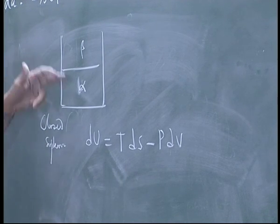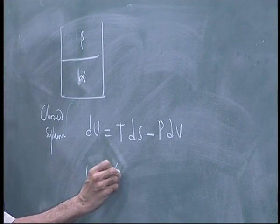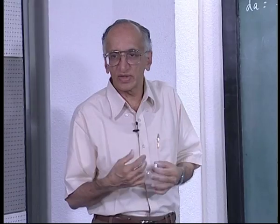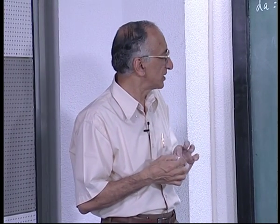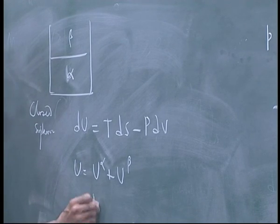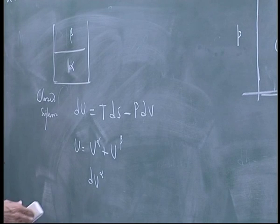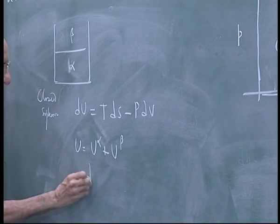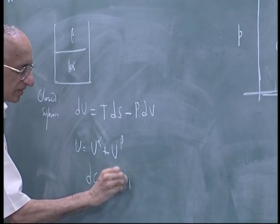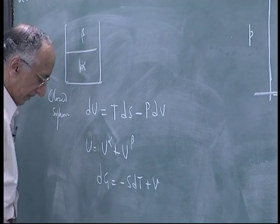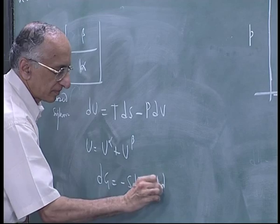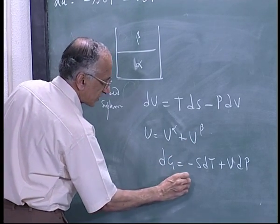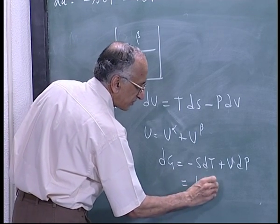So if I am writing a mix of two phases, U equals U_alpha plus U_beta — the internal energy is simply the sum of the alpha phase and beta phase internal energies. So if I rewrite this I get dU_alpha. It is more convenient to write it for G. So DG equals DG_alpha plus DG_beta.